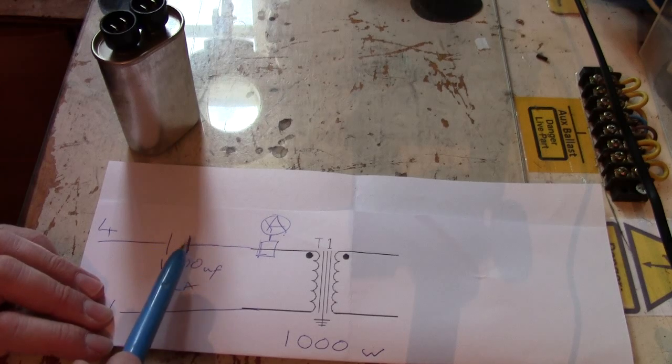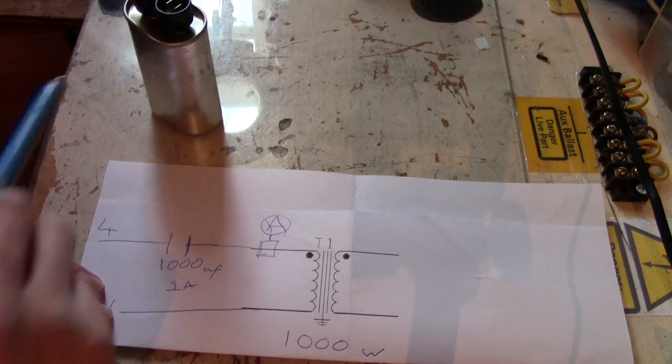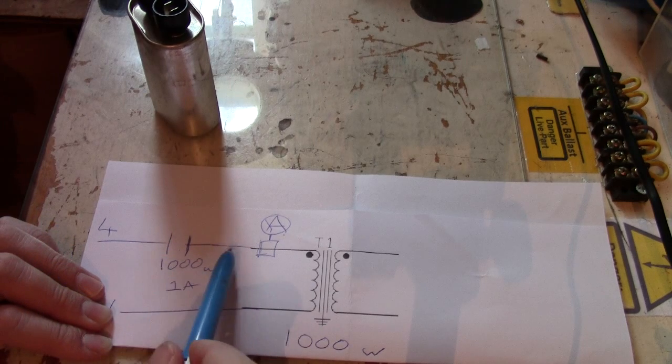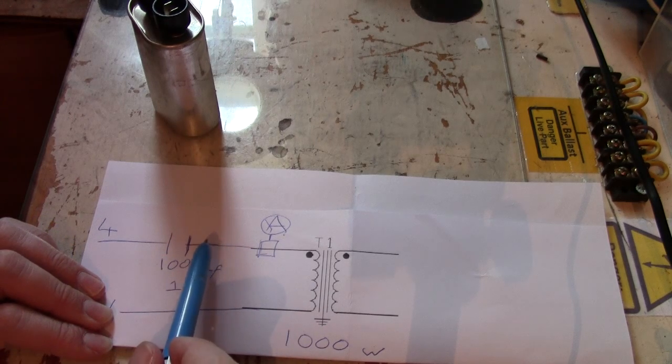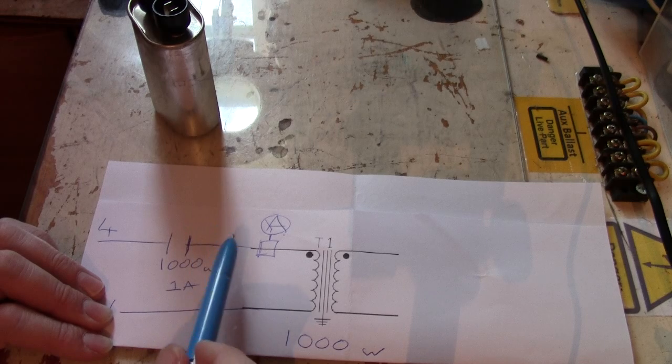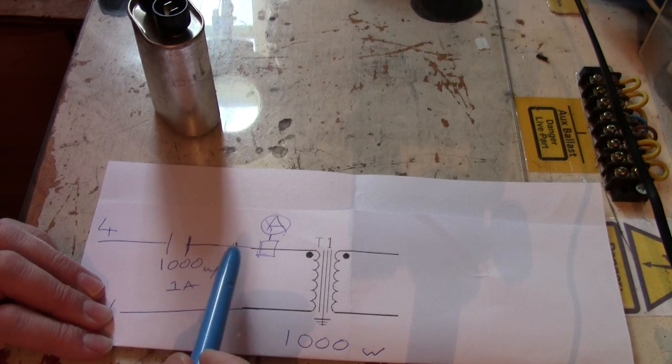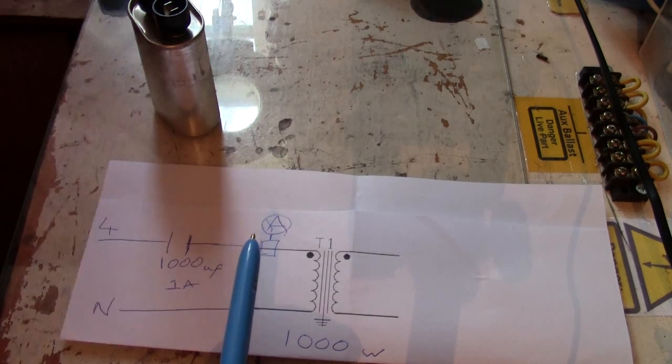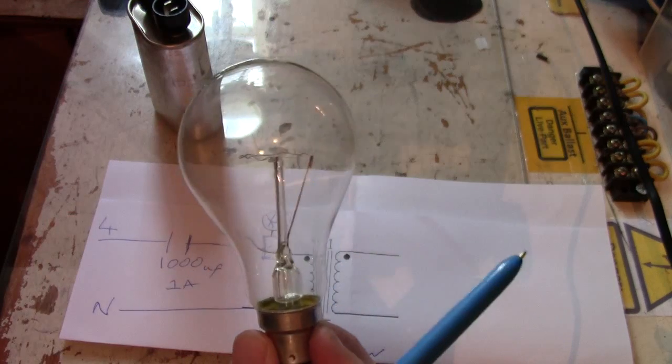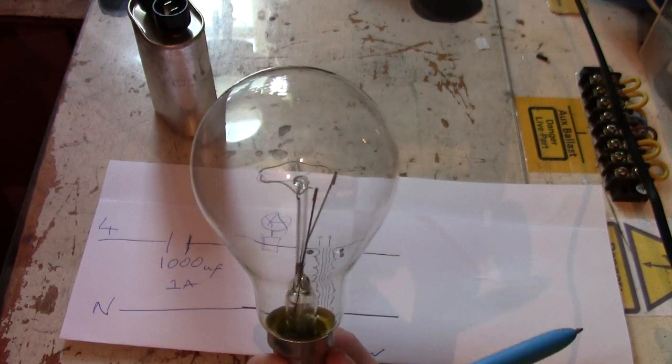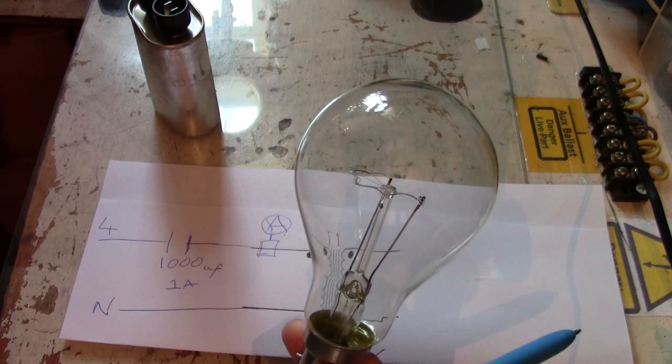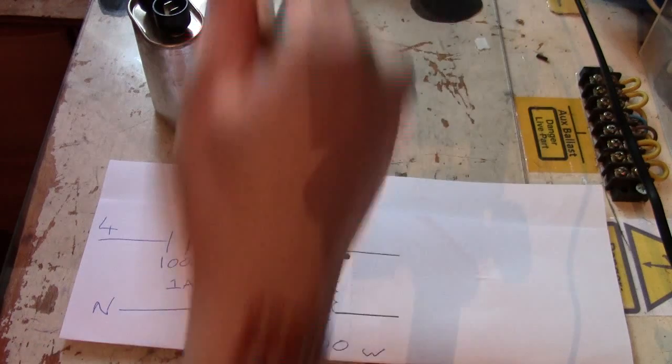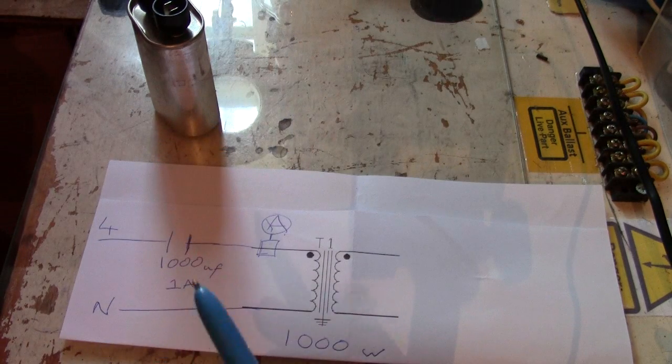The nice thing about capacitive ballasts is they don't change, they don't cause a phase shift. Again, I don't really want to go into it too much because it complicates things. It really, really does. With light bulbs, resistive ballasts, they also do not cause a phase shift.